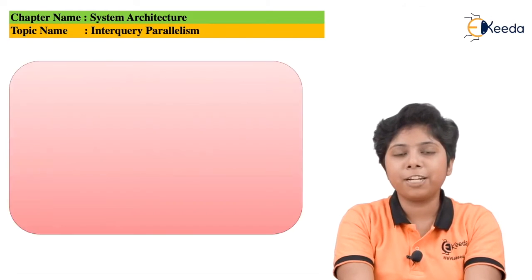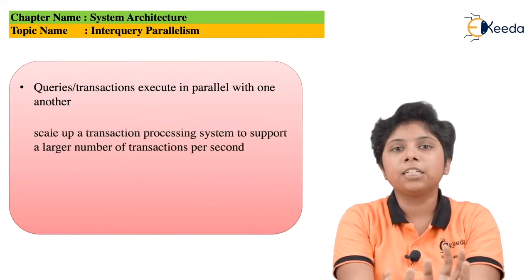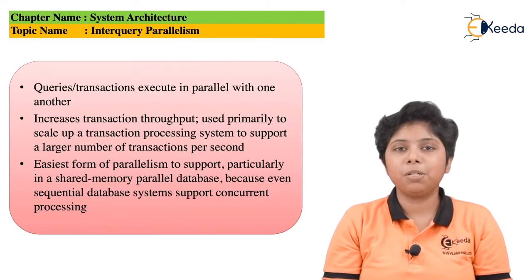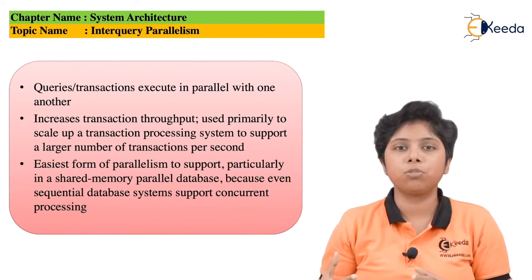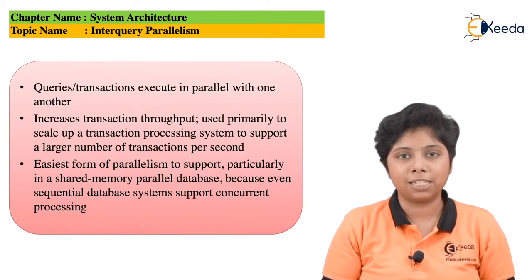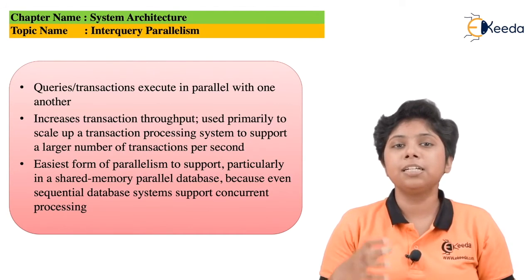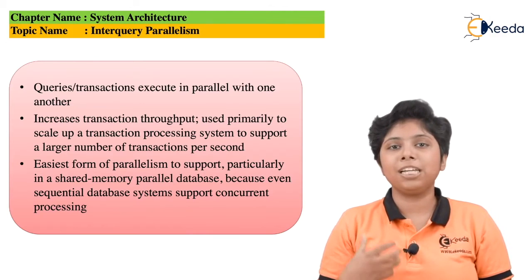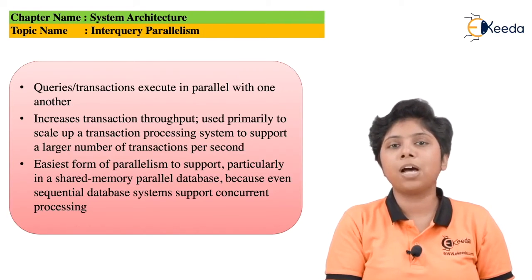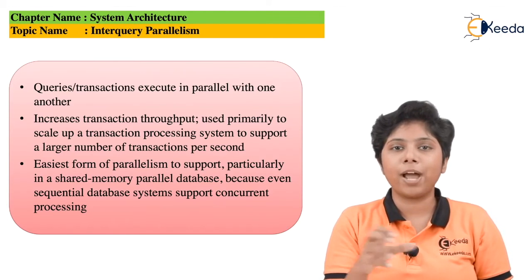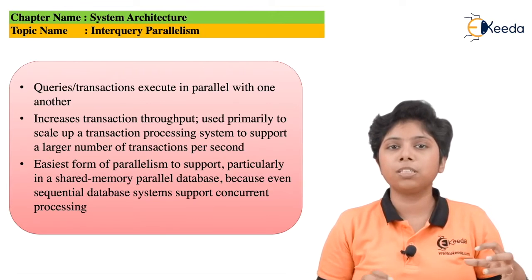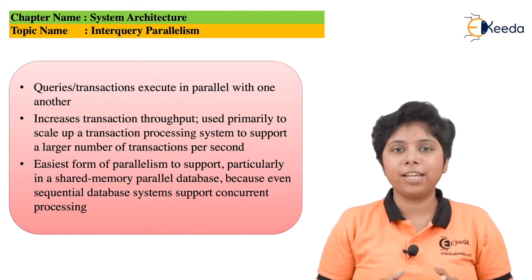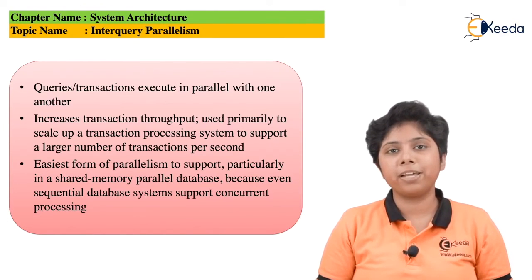There are several database management systems which allow queries or transactions to be performed hand in hand with each other — that means one query and one transaction, or two queries or two transactions, are performed simultaneously. This type of parallelism is the simplest type that can be offered by a DBMS. It increases efficiency on the CPU and also reduces IO overhead, because both queries can now run in parallel with each other when executed by a single transaction or by separate transactions.